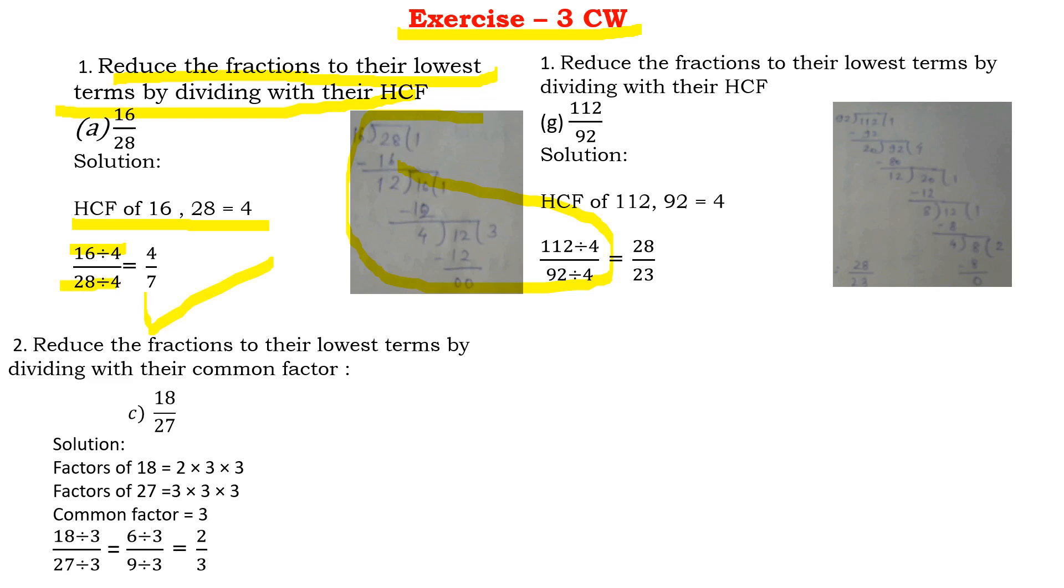Question number 1 G part I am doing 112 by 98. Again you will find the HCF. You will get the HCF of 112 and 98 as 4. You will divide 112 by 4. You will get a 28. 92 by 4 will give a 23. So the answer is 28 by 23.